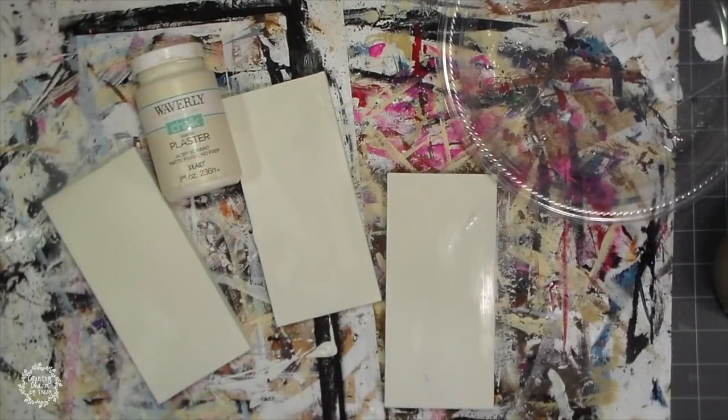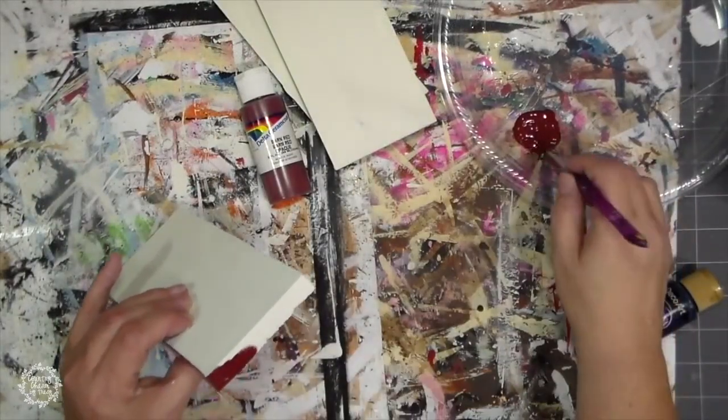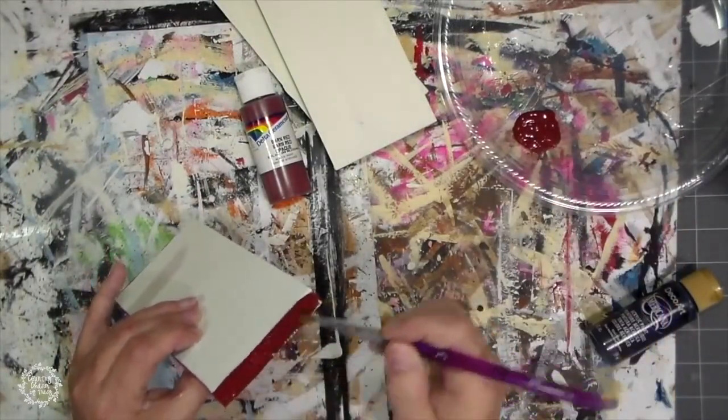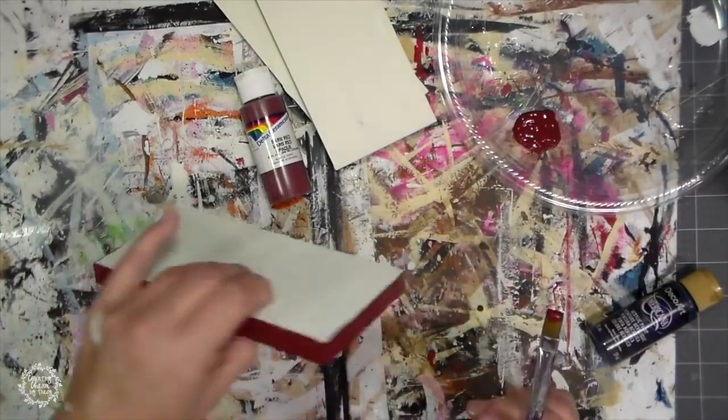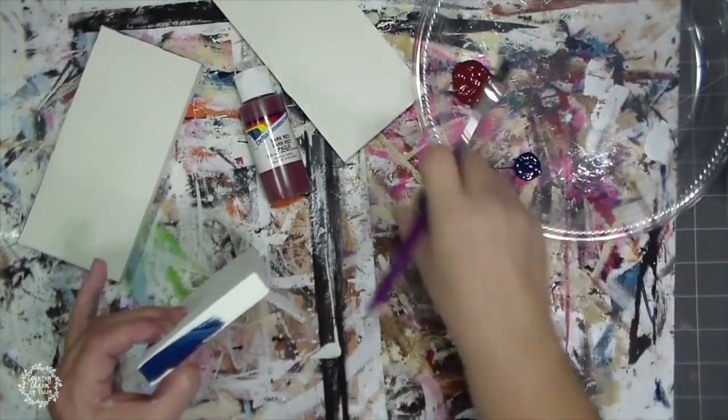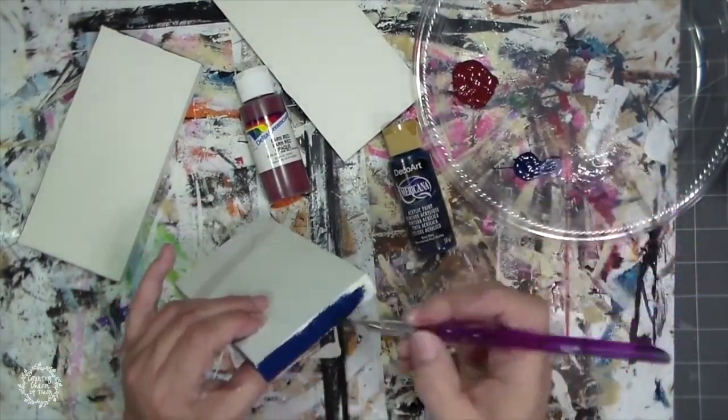I gave each of them two coats of plaster color chalk paint. I painted the edges of one of the books with this barn red color and then I painted another one with the navy blue color and then the other one I left white.